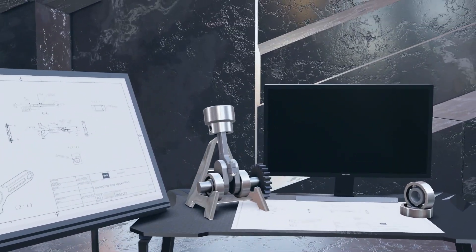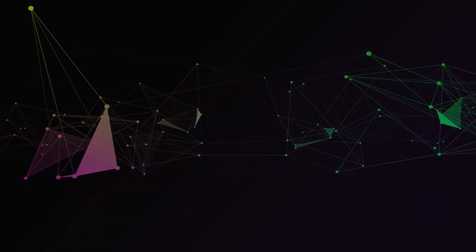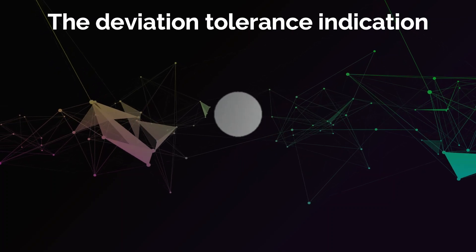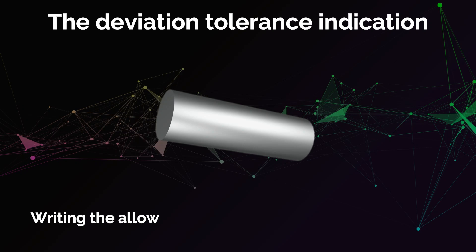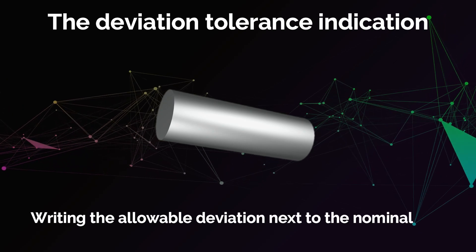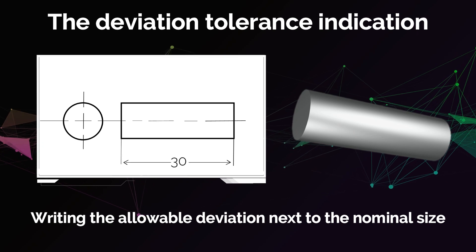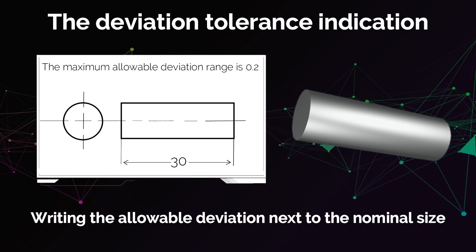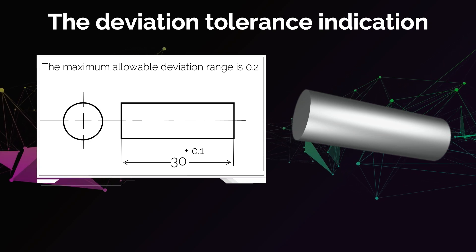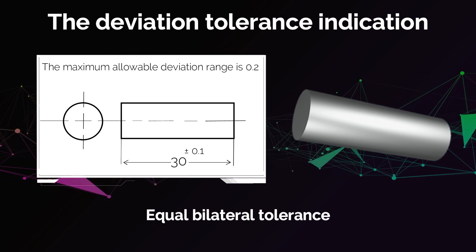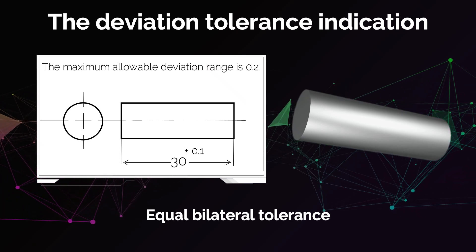There are several methods to indicate a dimensional tolerance on the drawing. One of the most used methods is the deviation tolerance indication. In this method, the indication of tolerances on the drawing is done by writing the allowable deviation next to the nominal size. For example, if the nominal size of a feature is 30 and the maximum allowable deviation range is 0.2, then the dimension will be written as 30 ±0.1. This is called an equal bilateral tolerance because the deviation is equal in both the negative and positive directions.